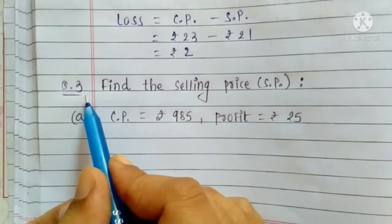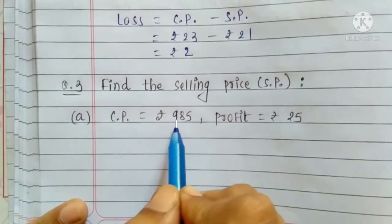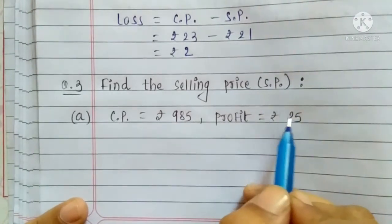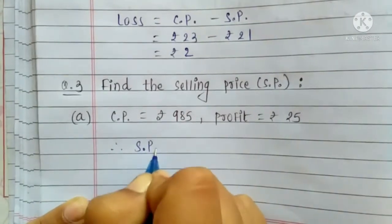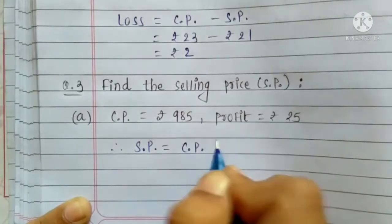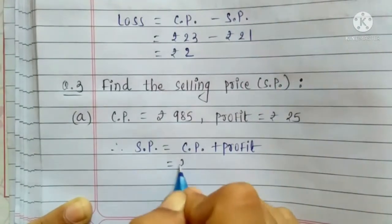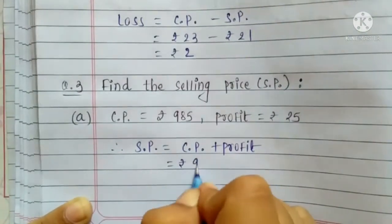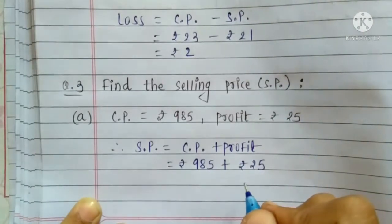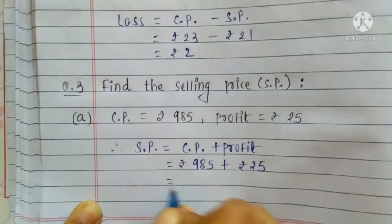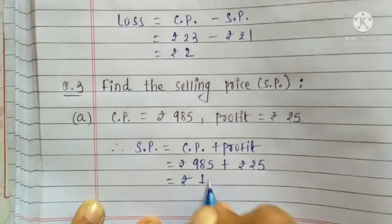Question no. 3: Find the selling price when cost price is equal to Rs. 985 and profit is equal to Rs. 25. Selling Price = Cost Price + Profit. Here, Cost Price is Rs. 985 and Profit is Rs. 25, so हम यहाँ पे इन दोनों का addition करेंगे. Answer मिलेगा Rs. 1,010.